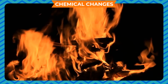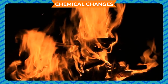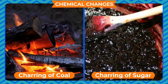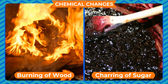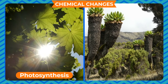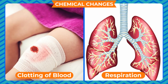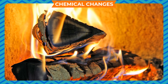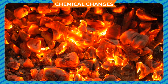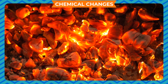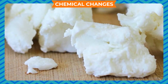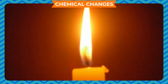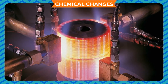There are many chemical changes taking place around us. Some common examples are curdling of milk, burning of paper, charring of coal, charring of sugar, burning of wood, etc. Many biological processes like photosynthesis, respiration, and clotting of blood are also examples of chemical changes. A chemical change is one in which an entirely new substance is formed with different properties. The change is usually irreversible and permanent. A new substance is formed, the composition of the matter has changed, the change cannot be reversed, and heat or light may be given out or absorbed.